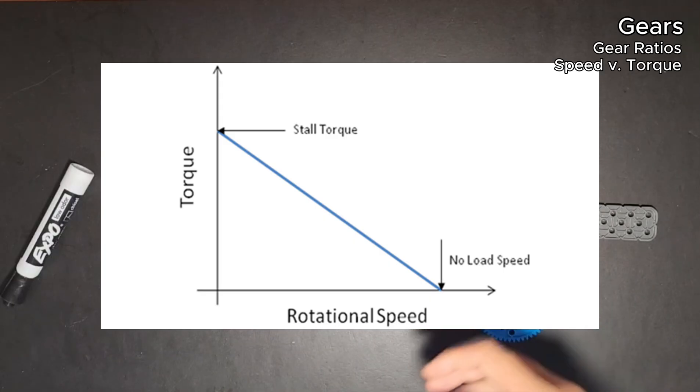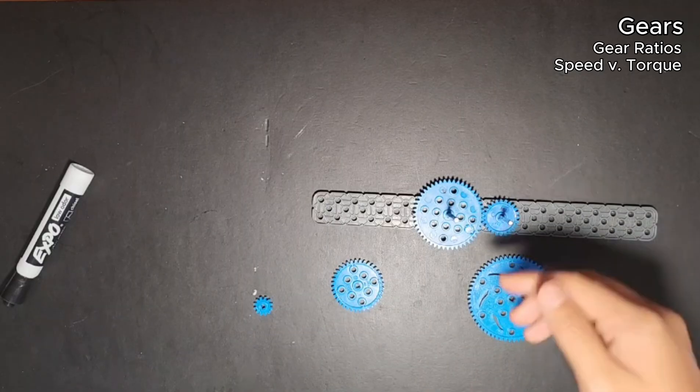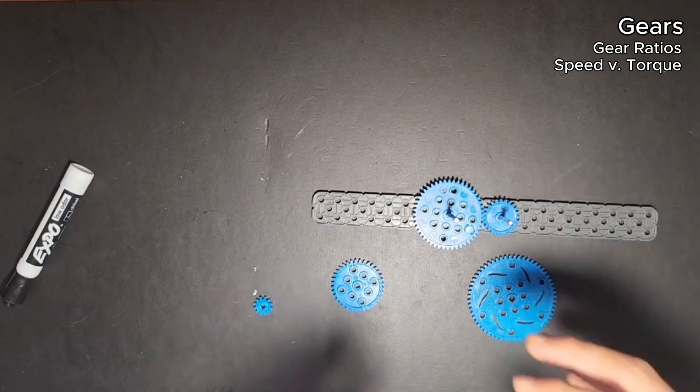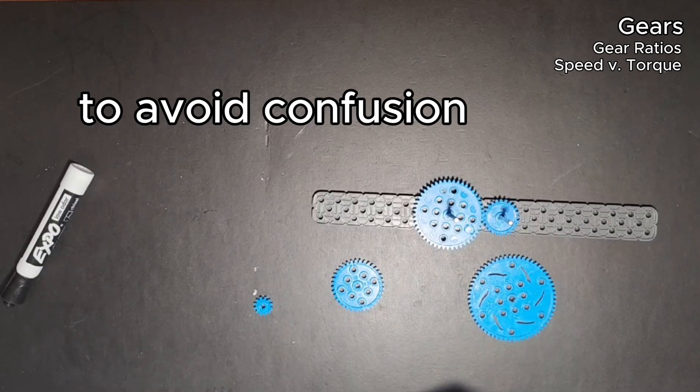So having this two to one gear ratio means that it's two times less strong as well. So it's two times weaker. It's also good to specify if the ratio is speed or torque.